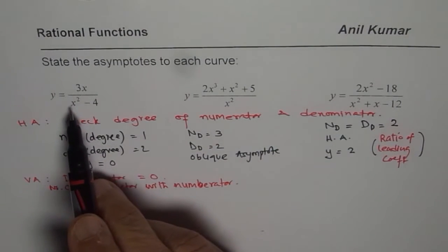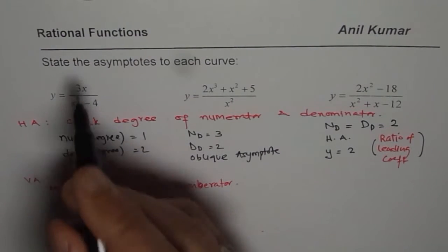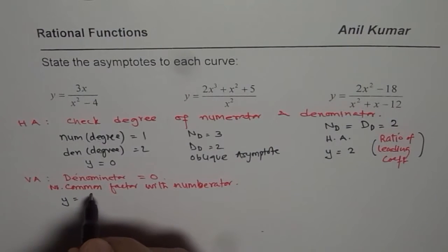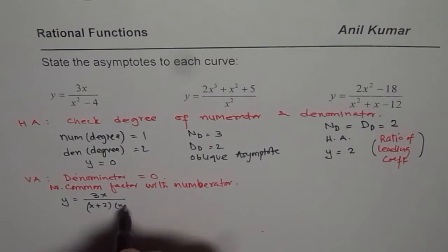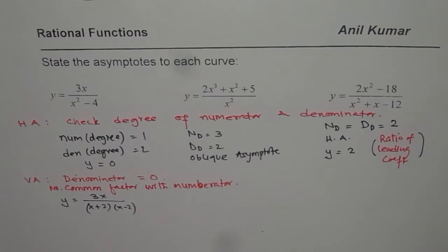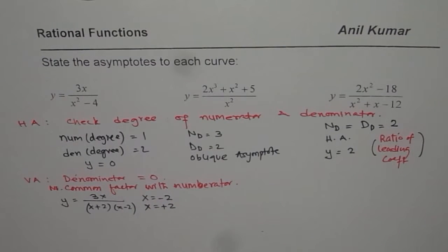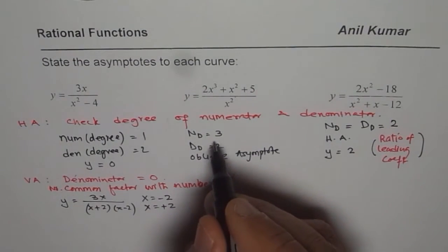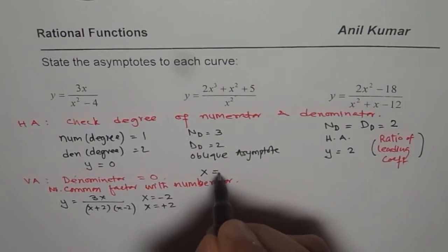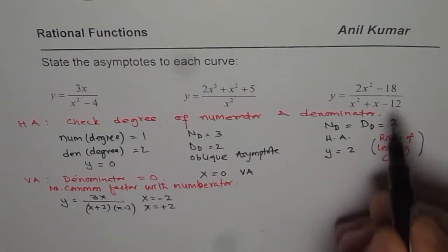If I analyze the first function, y equals to 3x over x squared minus 4, I can write the denominator as x plus 2 times x minus 2. So we have two vertical asymptotes: x equals to minus 2 and x equals to plus 2. For the second function, the denominator is x squared, so we have one vertical asymptote at x equals to 0.